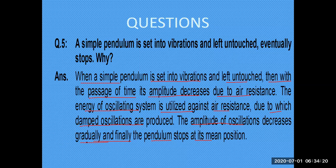What happens in the case of damped oscillation? It happens in the case of a swing, it happens in the case of a pendulum. When it is set into vibration and left, with the passage of time its amplitude decreases. Why does its amplitude decrease? Because of air resistance. Air resistance is one of the sources where the energy of the oscillating system is consumed.